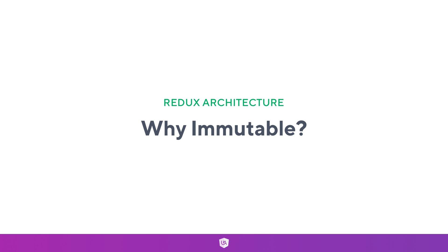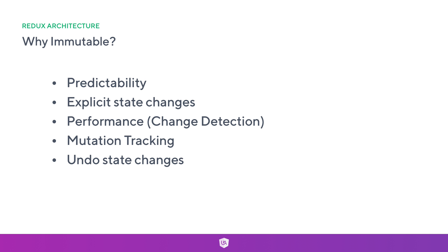Why should we actually be treating our data as immutable? We've got predictability. The number one thing with predictability is we don't have these object references to everything. Things like objects and arrays are completely mutable, so we just need to learn how to treat them as immutable. When we want to update something, we just make a copy.